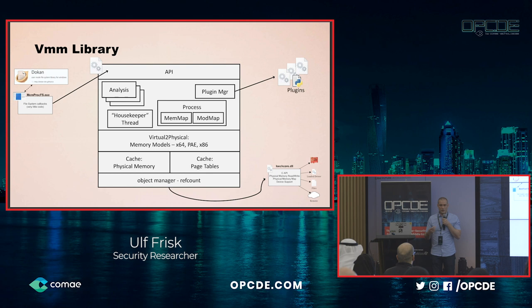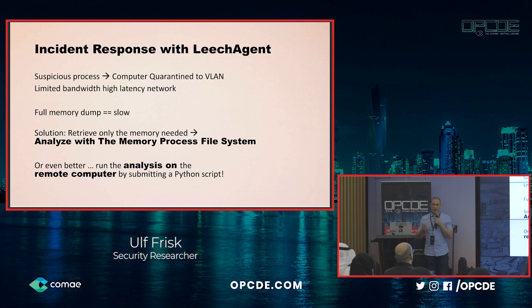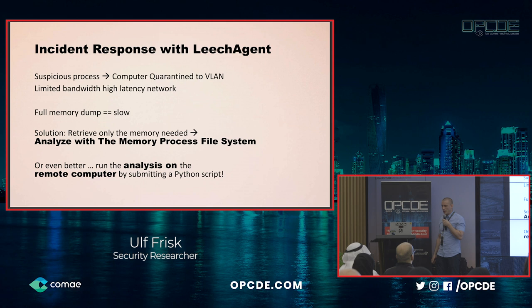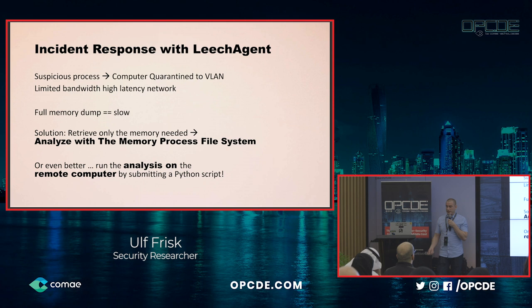Imagine you have an incident response scenario — a suspicious process on a remote system, possibly quarantined to a VLAN, with limited bandwidth and high latency. You want to analyze physical memory, but a full memory dump over the network might be super slow. The solution might be to retrieve only the memory you actually need to analyze with the Memory Process File System. Or even better, it's possible to run the analysis on the remote computer by submitting a small Python script.